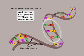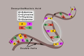The alphabet pieces always join together in pairs to form the rungs of the ladder. A always pairs with T, and C always pairs with G.